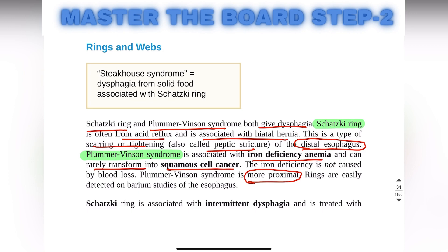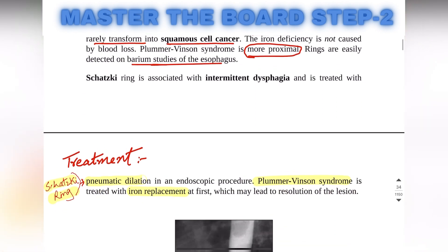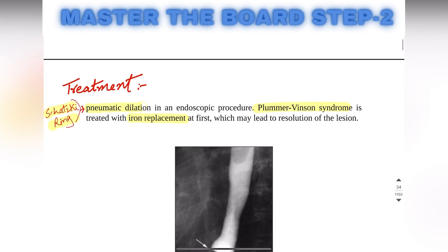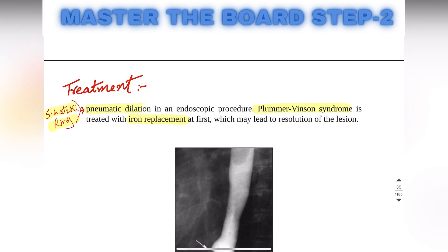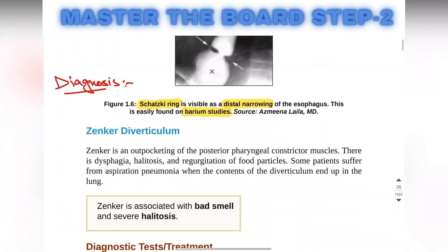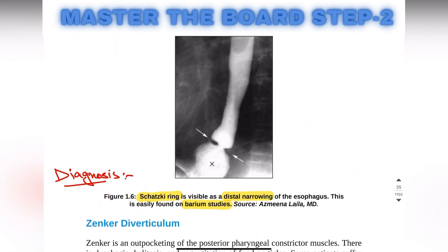Rings are easily detected by barium studies of the esophagus. The treatment of Schatzki ring is pneumatic dilation, an endoscopic procedure, while for Plummer-Vinson syndrome the treatment is iron replacement.